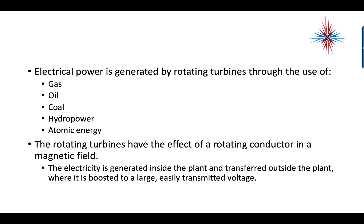Electrical power is generated at a generating plant using rotating turbines powered by gas, oil, coal, hydropower, or atomic energy. The rotating turbines have the effect of a rotating conductor in a magnetic field. The electricity is generated inside the plant and transferred outside, where it is boosted to a large, easily transmitted voltage.